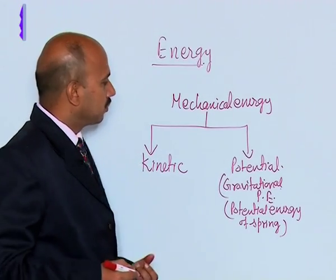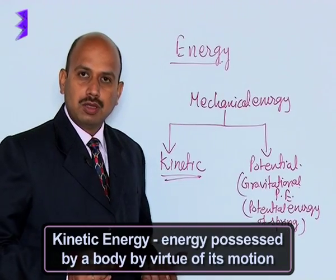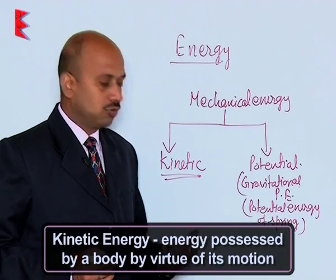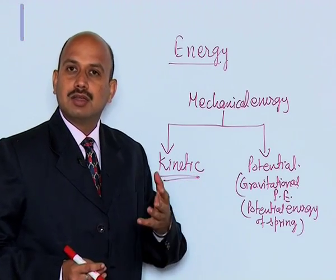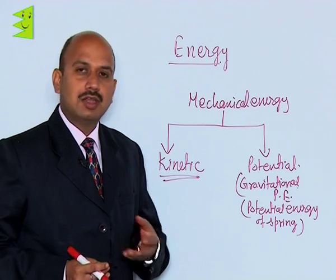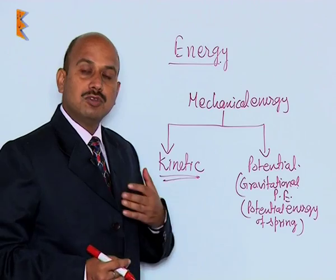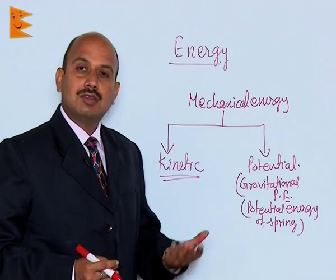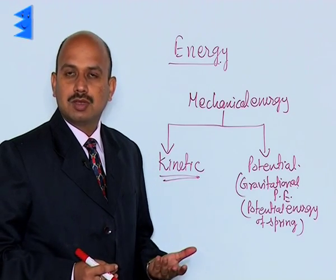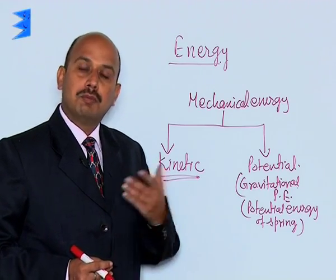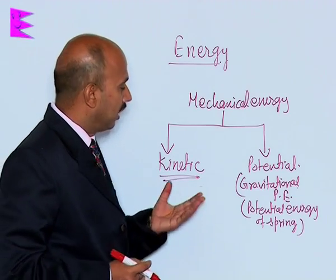What is kinetic energy? The energy possessed by a body by virtue of its motion is known as kinetic energy. For example, a bullet is fired — the bullet has velocity, it has its mass, so it has kinetic energy. When it strikes any target, this kinetic energy gets converted into another form of energy. Similarly, a running bus, running car, or moving ball — these things have energy due to their motion, and these are known as kinetic energy.